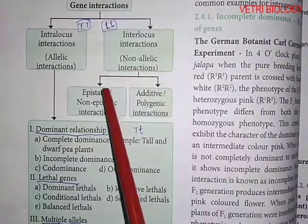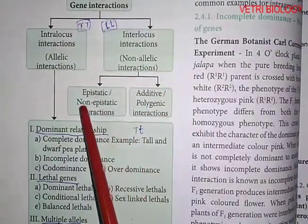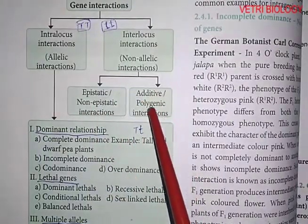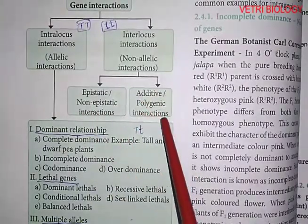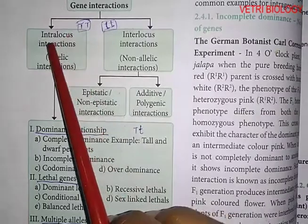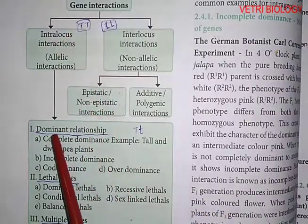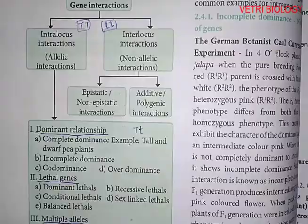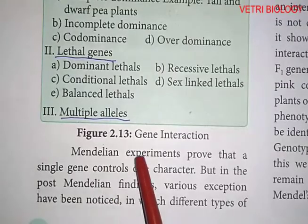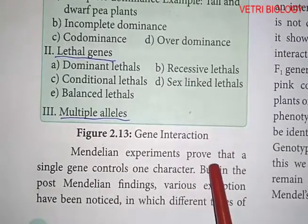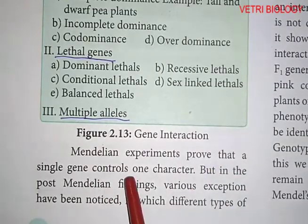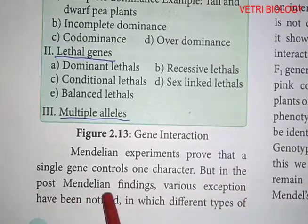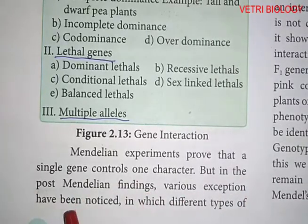Interlocus interactions are of two types: epistatic and non-epistatic interaction, and additive and polygenic interactions. Intralocus interactions are: dominant relationship, lethal genes, and multiple alleles. Mendelian experiments proved that a single gene controls one character, but in post-Mendelian findings, various exceptions have been noticed.